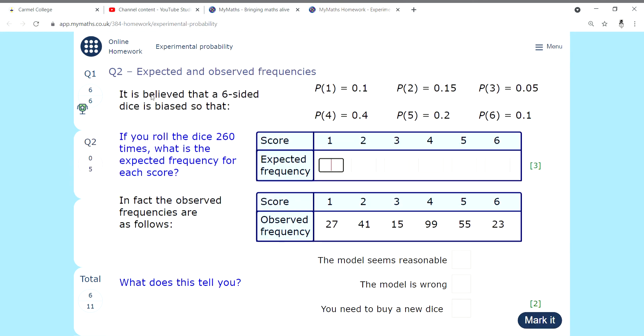The first thing says I believe that a six-sided dice is biased, so it's not going to be fair. If you roll the dice 260 times, it's going to be the relative frequency. So 0.1 times 260 is going to be 26, 0.15 times 260 is going to be 39, just use your calculator for this. The next one, 0.05 times 260 is 13. Then 0.4 times 260 is 104. The next one is going to be 0.2 times 260, which will be 52. And then the last one, 0.1 times 260 is going to be 26.